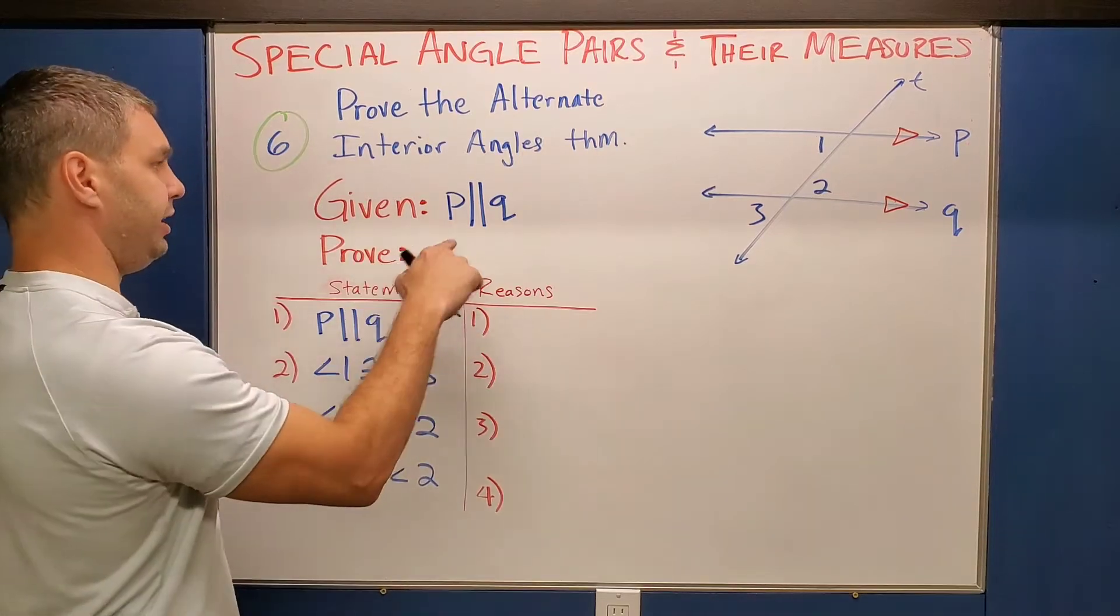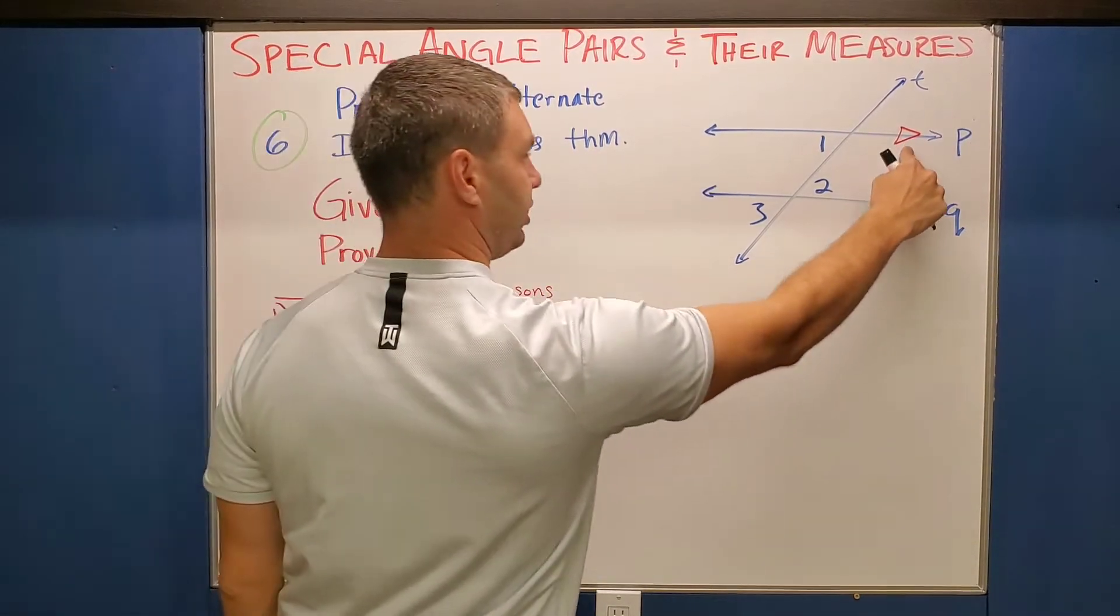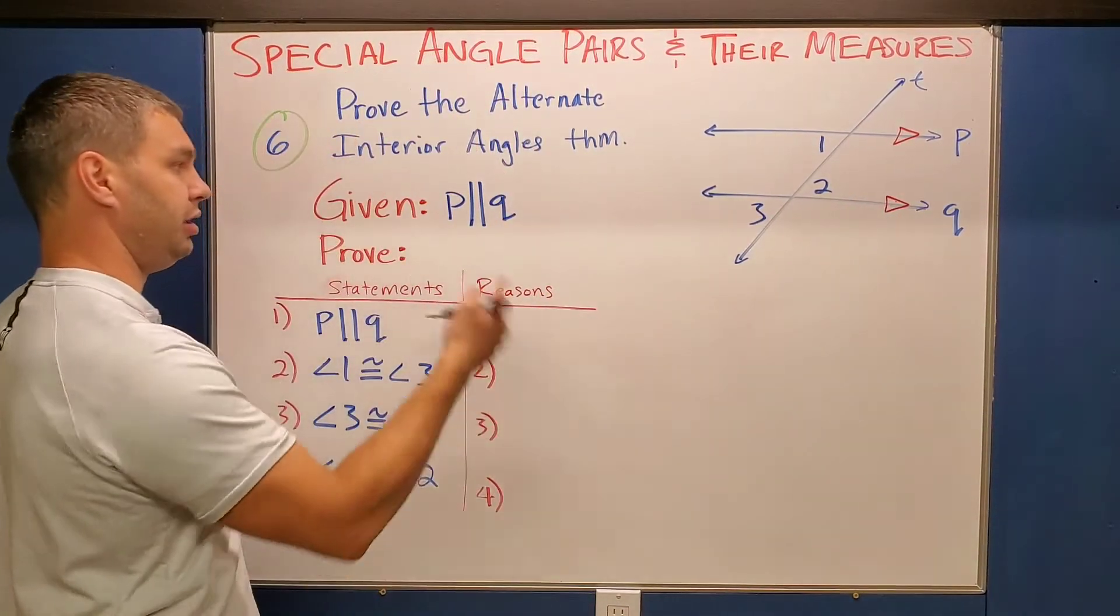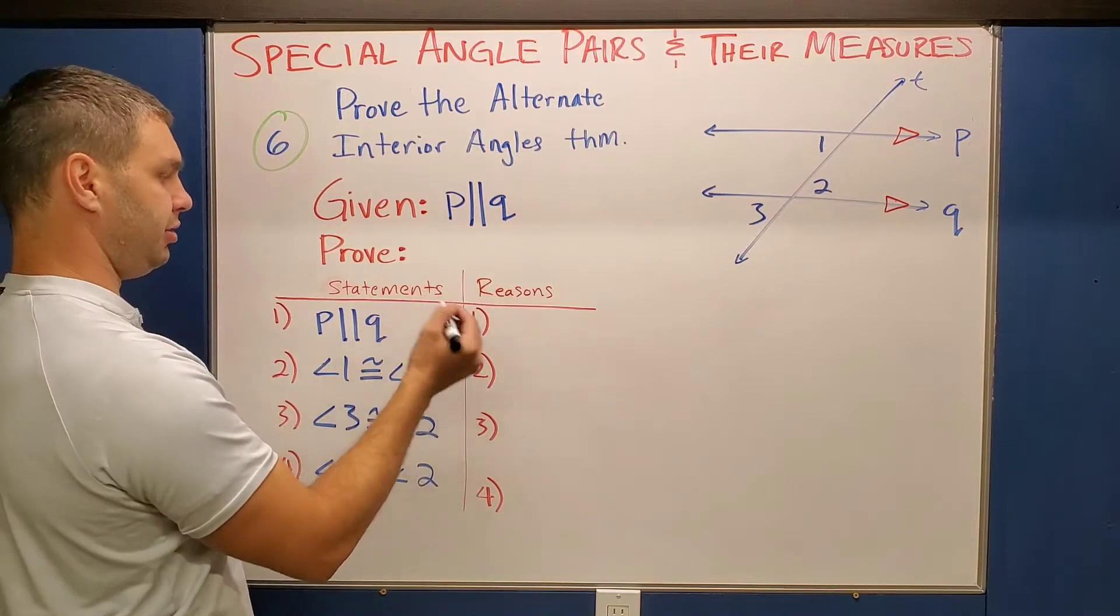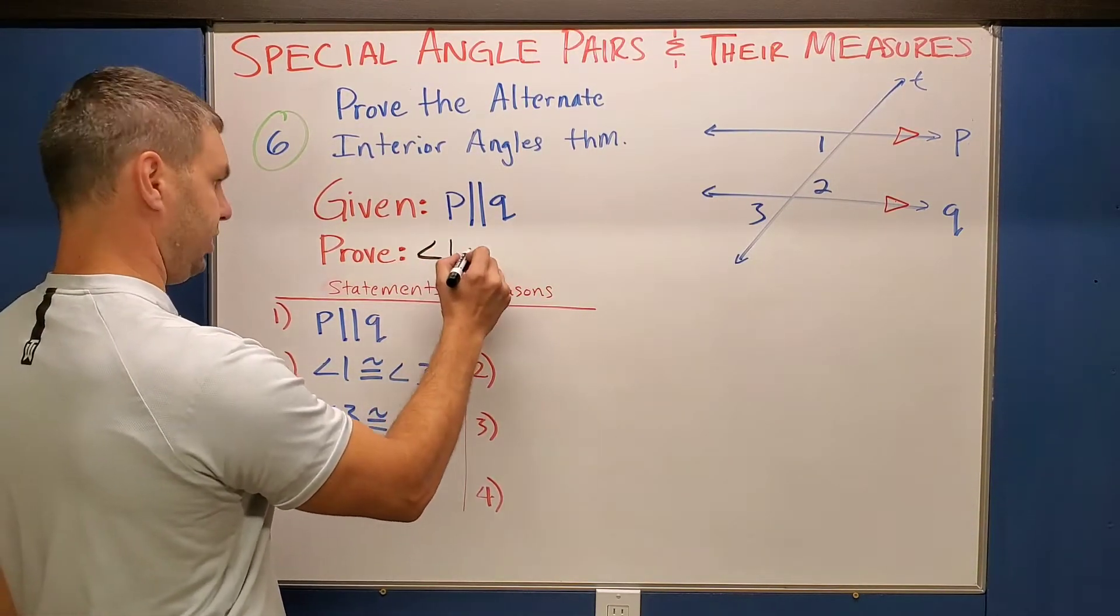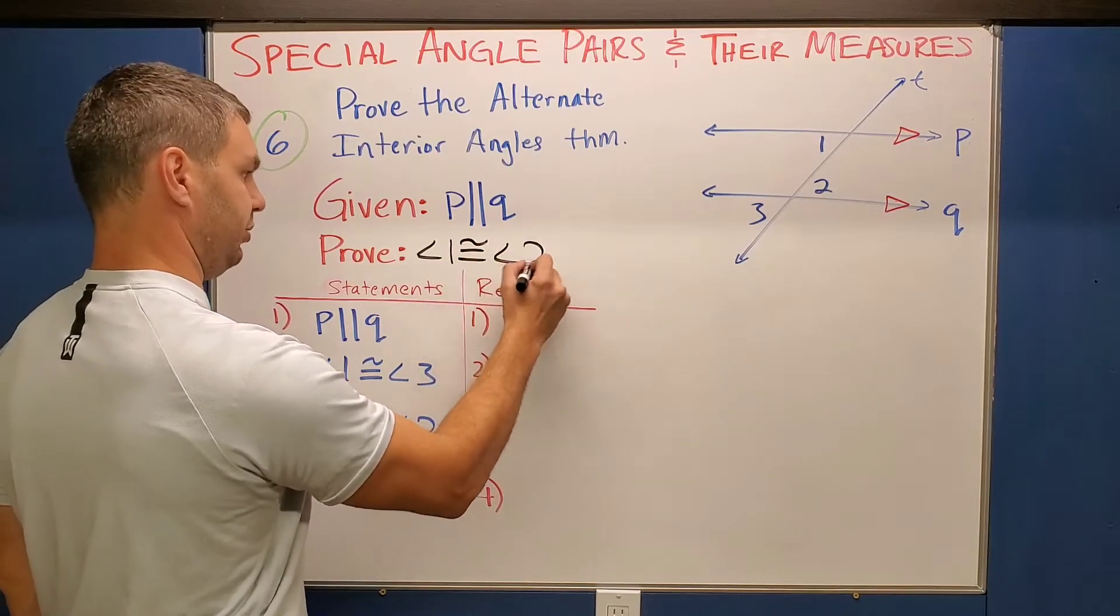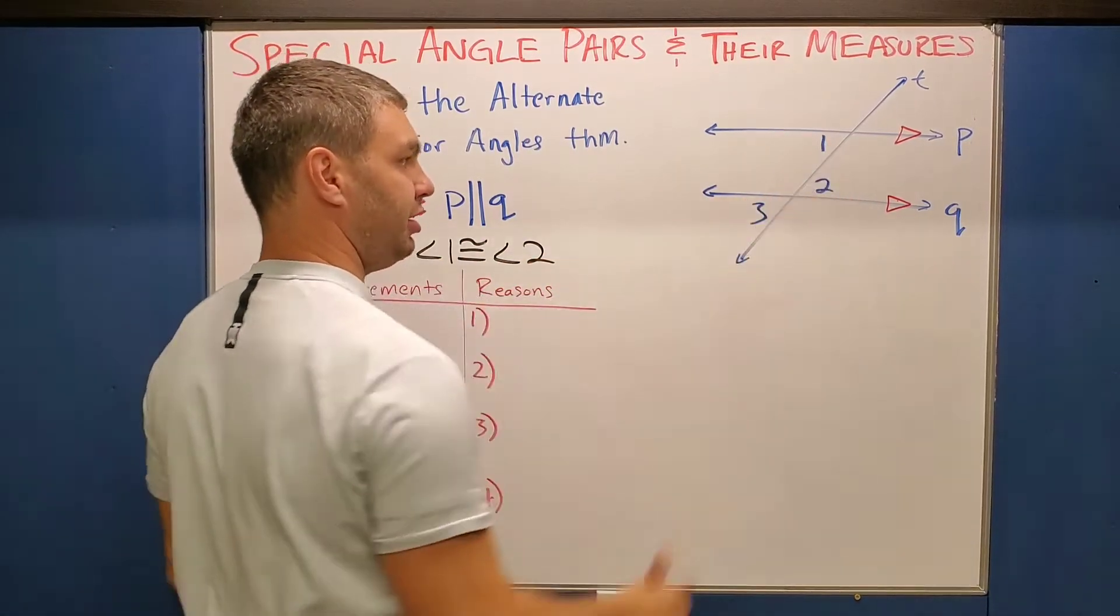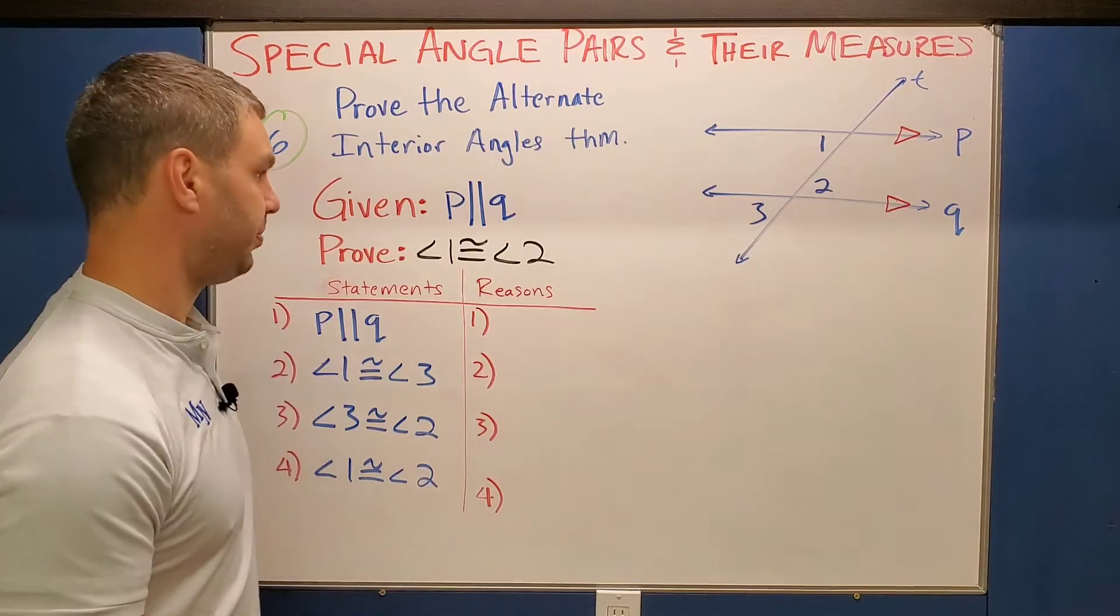So here we're given that P is parallel to Q. I drew these arrows to show our parallel lines. We need to prove that angle one is congruent to angle two. That's the alternate interior angles on the inside of those two parallel lines. How do I prove that?